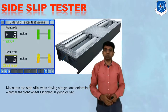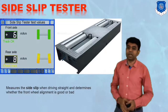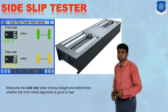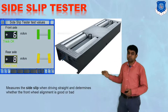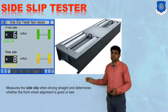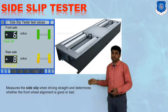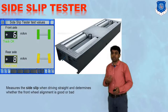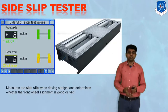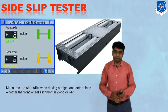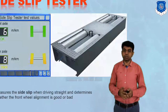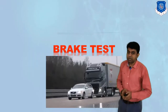From that, you can have a clear idea of how much slip is present. It measures the side slip when driving straight and determines whether the front wheel alignment is good or bad. That's all about this particular side slip tester.